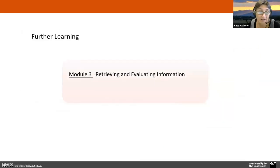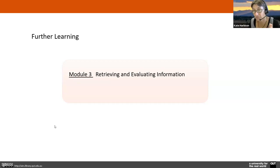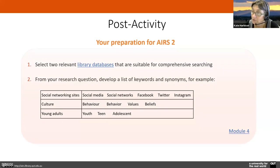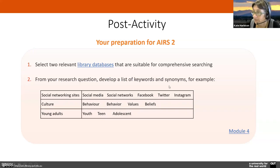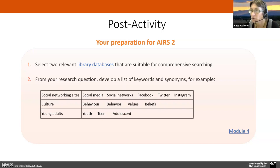The next module is about retrieving and evaluating information. You can click there and get more information about how to judge whether the material is meeting your needs and is the sort of material you want. In preparation for EAS2, select two relevant databases that are suitable for your search, and from your research question develop a list of keywords and synonyms to try. While you're doing that, have a look at what the subject headings are in those databases, because that's a really good way to prove that your theoretical constructs are recognisable.